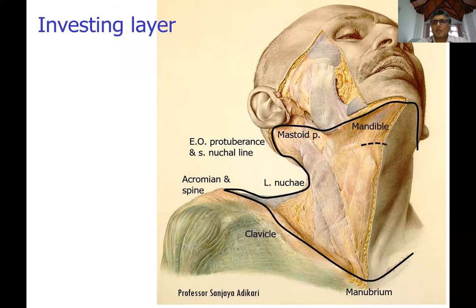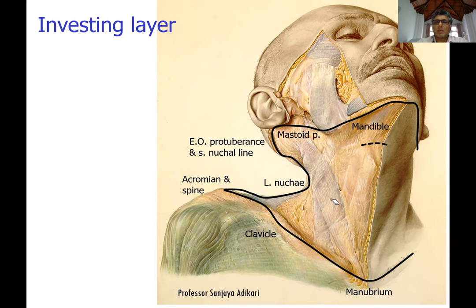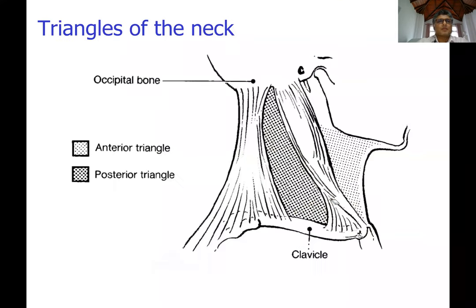Anteriorly, the investing layer is also attached to the body of the hyoid bone, creating a well-defined angle between the neck and the floor of the mouth. That is the full attachment of the investing layer of deep cervical fascia.